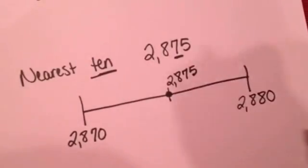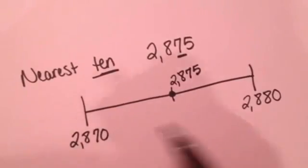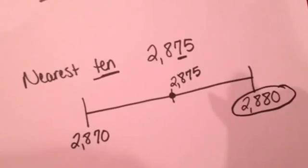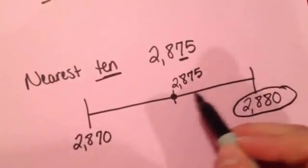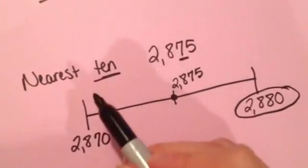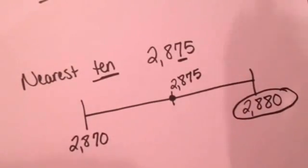So if you owe me $2,875 and you only have $10 bills, I'm going to tell you that I want $2,880. Because since it's in the middle or on the right-hand side, it's closer to $2,880. So $2,875 rounded to the nearest ten would be $2,880.